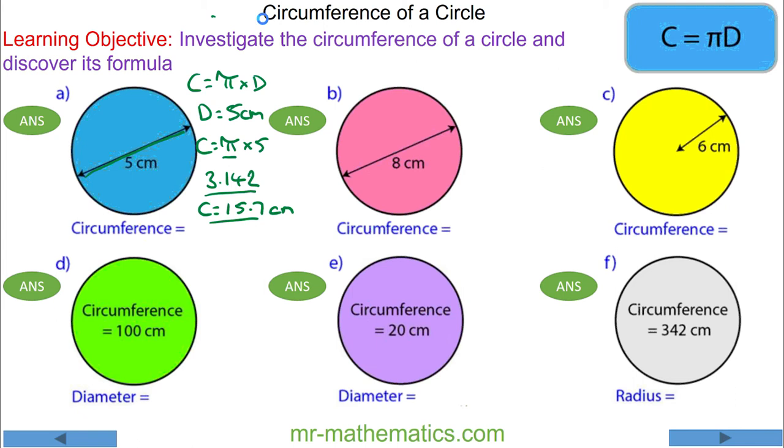For question b, the diameter is 8 centimeters, so the circumference is pi multiplied by 8, which is 25.1 centimeters.